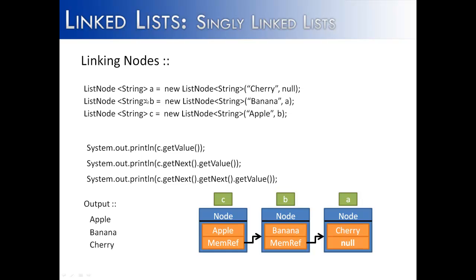Because we've named all of these nodes, we could just say B.getValue() or A.getValue(), but it's not common to name each node in a list. What is common is to know where the beginning of the list is and work your way down from there — and in some cases, knowing the end of the list and working your way up.